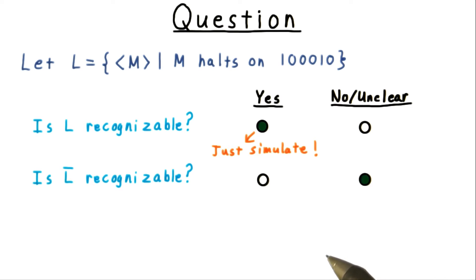If M loops, then so will this machine. If it doesn't loop, then this machine will accept.